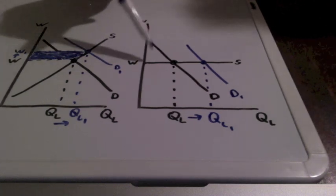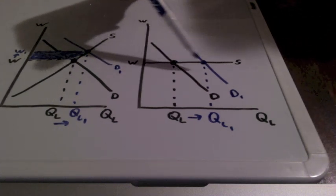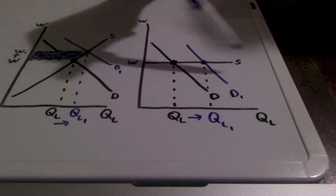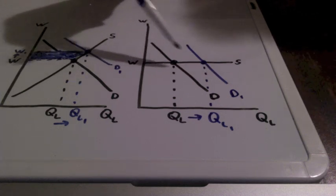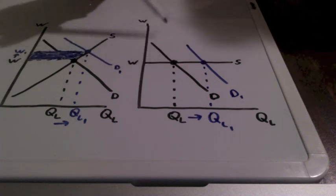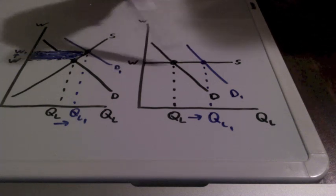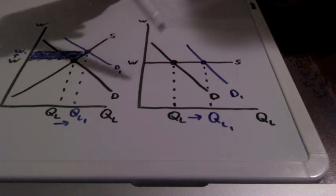In our final example, you can see that our supply curve is perfectly elastic, meaning there's an infinite number of substitutes for this particular kind of labor. This would be considered low-skilled labor.